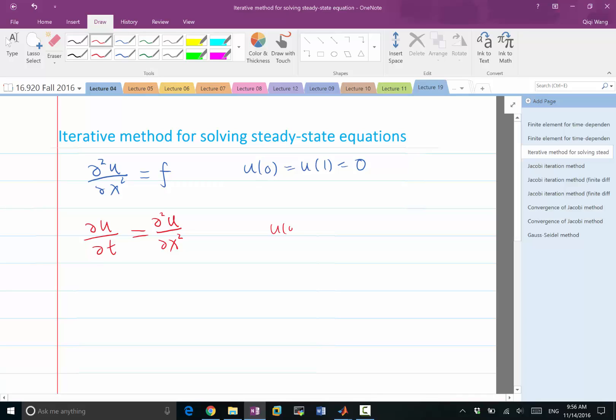And again, u(0) equal to u(1) equal to 0. So if I solve this equation, I will get 0 at the end. So how should I modify this equation so that I get a solution to the equation I want to solve at the end? Minus f, right?